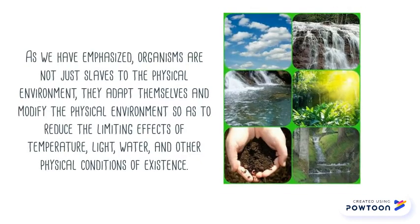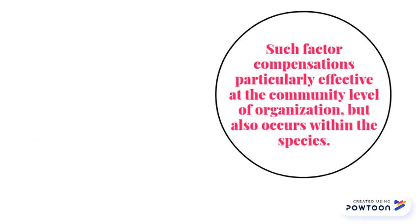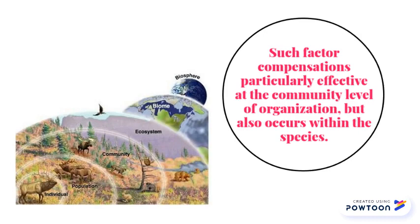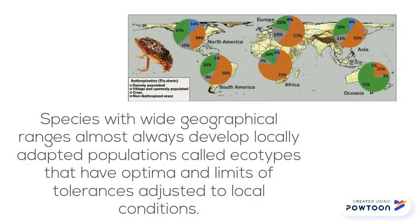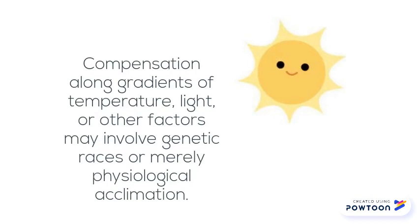As we have emphasized, organisms are not just slaves to the physical environment. They adapt themselves and modify the physical environment so as to reduce the limiting effects of temperature, light, water, and other physical conditions of existence. Such factor compensations are particularly effective at the community level of organization but also occur within the species. Species with wide geographical range almost always develop locally adapted populations called ecotypes that have optima and limits of tolerances adjusted to local conditions. Compensation along gradients of temperature, light, or other factors may involve genetic races or merely physiological acclimation.